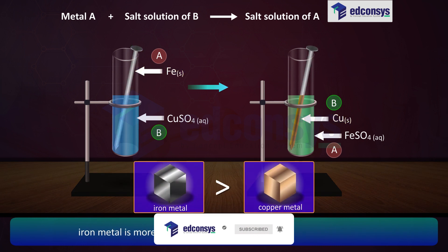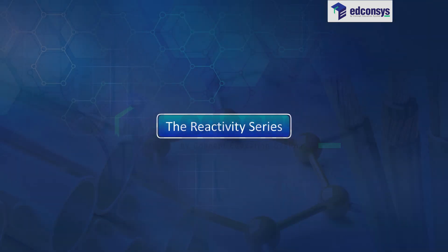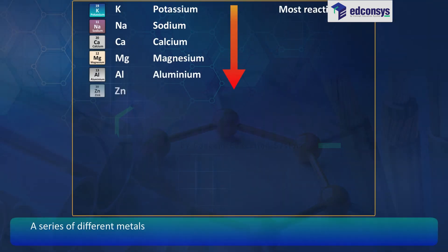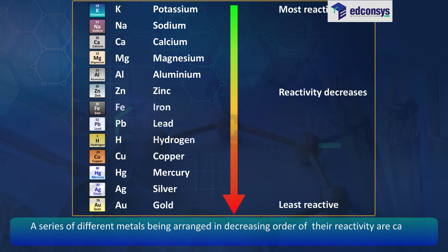Based on observation, the reactivity series: a series of different metals being arranged in decreasing order of their reactivity, are called reactivity or activity series.